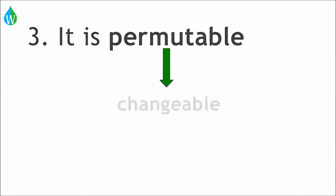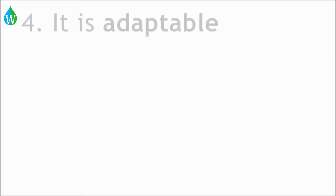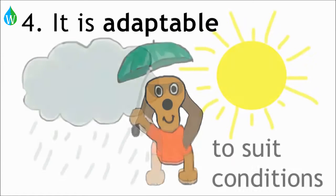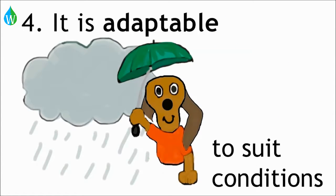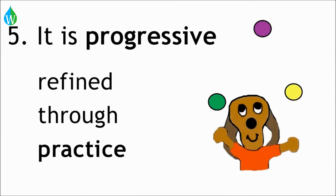It is permutable. This means that the pattern or sequence may change. The order of things might swap around. Four, it is adaptable, so it can be changed to suit conditions. And five, it is progressive, so it can be performed and refined through practice.